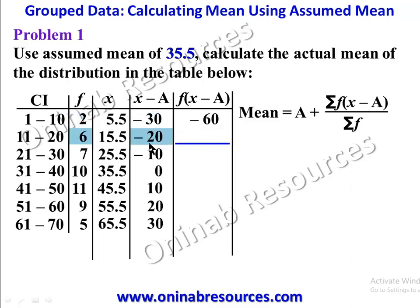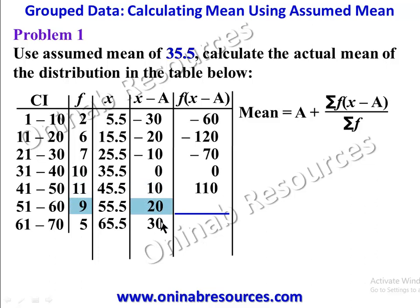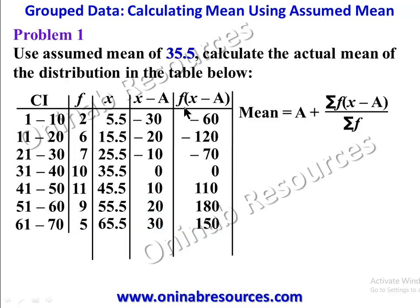For the f times (x minus a) column: 2 times negative 30 gives negative 60; 6 times negative 20 gives negative 120; 7 times negative 10 gives negative 70; 10 times 0 gives 0; 11 times 10 gives 110; 9 times 20 gives 180; and 5 times 30 gives 150.